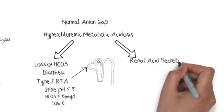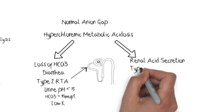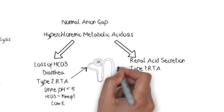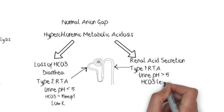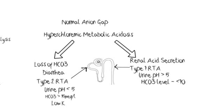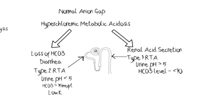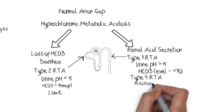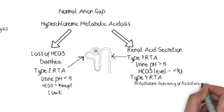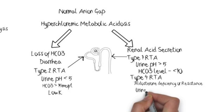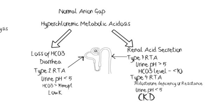The other category is decreased renal acid secretion. In type 1 RTA, there is reduced acid secretion in the collecting duct, so urine pH is greater than 5, and bicarb can be as low as less than 10. In type 4 RTA — the most common form — hypoaldosteronism leads to reduced acid and potassium secretion in the collecting duct, causing hyperkalemia. Since the H-ATPase is functional, urine is acidified and pH is less than 5. These patients usually also have CKD.